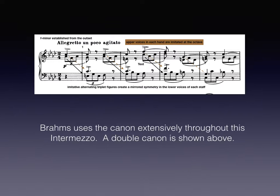What immediately jumps out in the first thematic area is the obvious use of counterpoint between the left and the right hands. As you look at the first eight measures — which are not all pictured here for space considerations — we essentially see that a canon is formed with the upper voice of the left hand imitating at the interval of an octave the upper voice of the right hand.